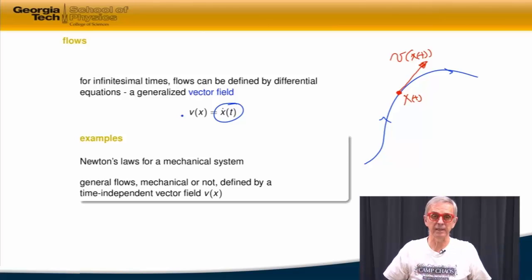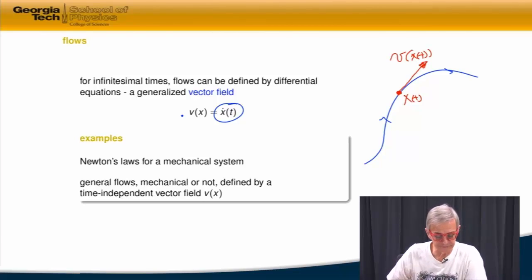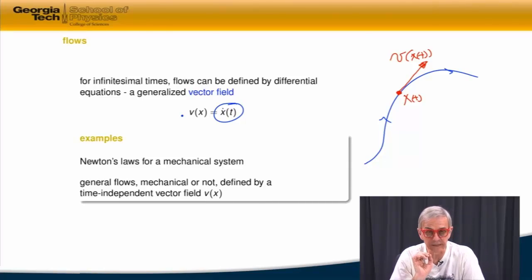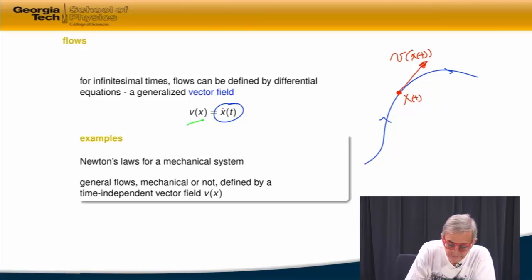The example you're familiar with is Newton's law for mechanical systems. There is a velocity which is a change of position, and then you also have to specify acceleration, which is the change of the velocity. This field, in the Newtonian case, would be the change of position and acceleration — the change of momentum.